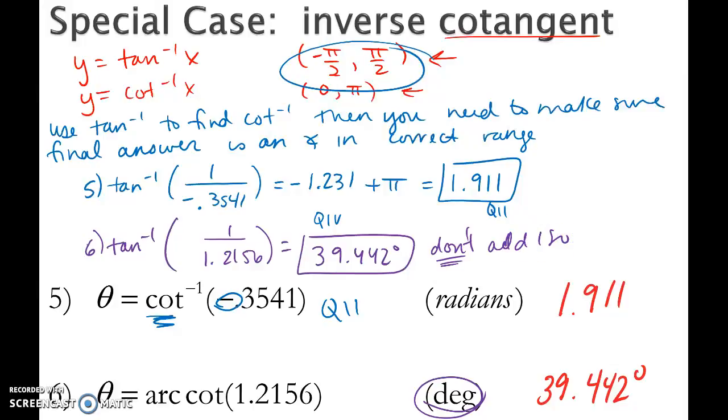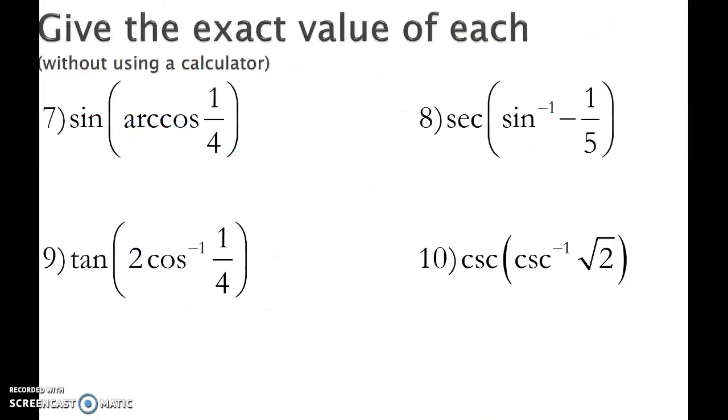If you were to add 180, you would get an answer that's down in quadrant 3, which is also outside of the restrictions for cotangent.